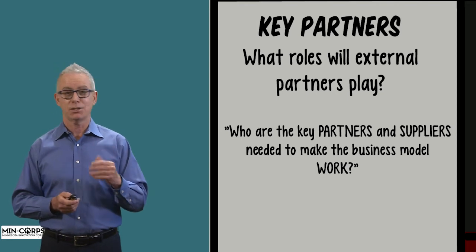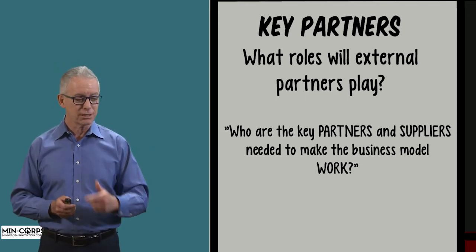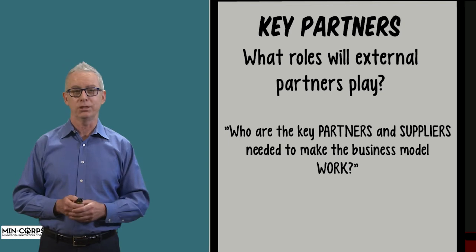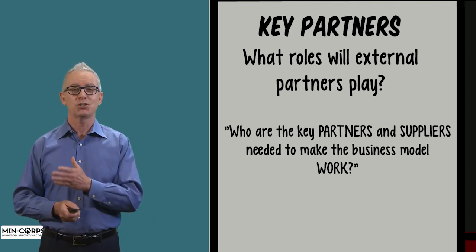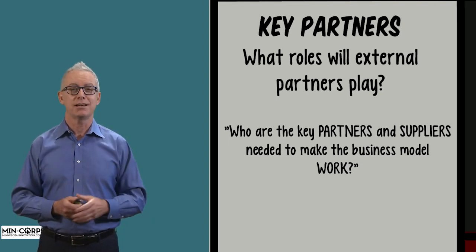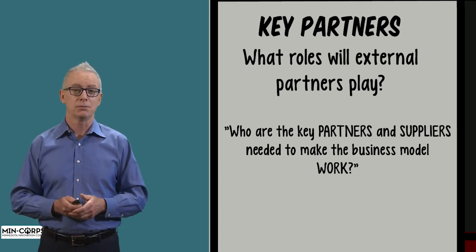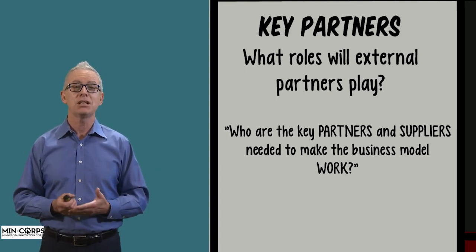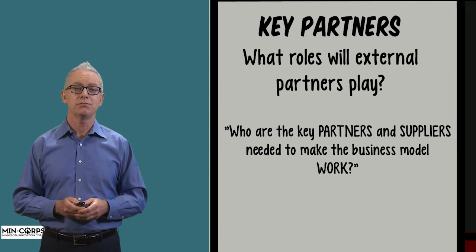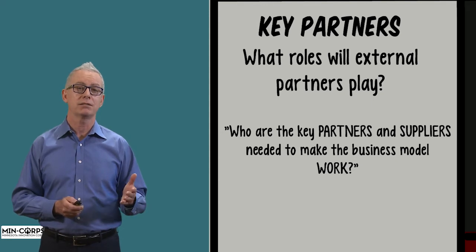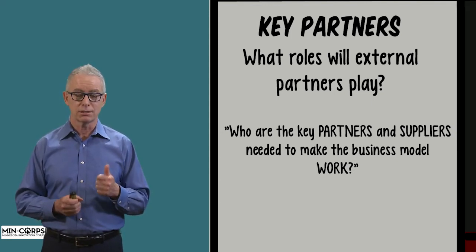For instance, you might not have distribution capability, but UPS, FedEx, and Uber Delivers are partners who can actually deliver things for you. Why build all that additional cost structure if you can rely on a partner? Similarly, there might be manufacturers who have invested in the capital to manufacture more effectively and efficiently than you could — that's expertise.